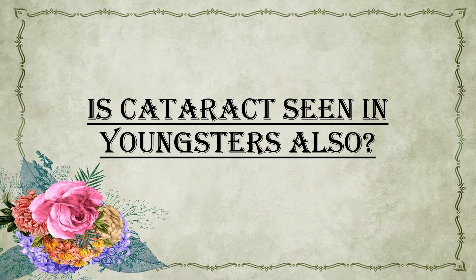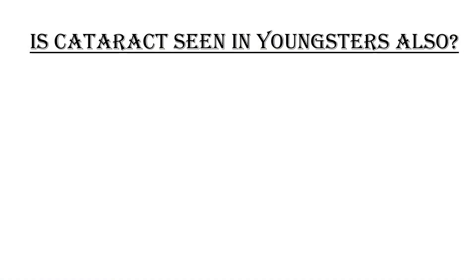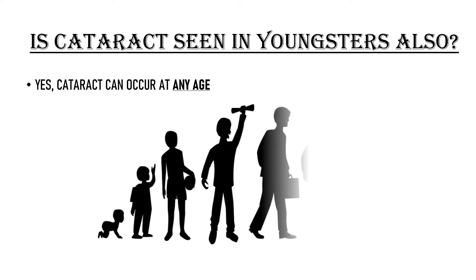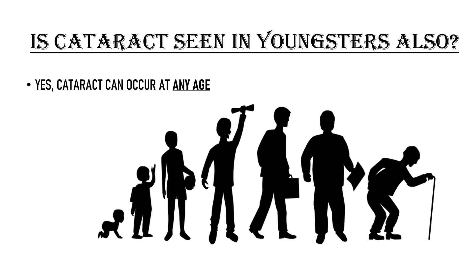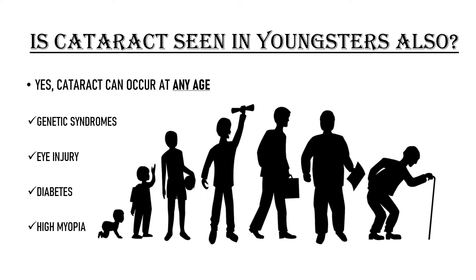Is cataract seen in youngsters also? Yes, cataract can occur at any age. Although the most common type is age-related, cataract can also be present in newborn babies, teenagers, and young adults. It can occur due to a genetic syndrome or after some injury to the eye. It is also seen in people who suffer from diabetes, those who wear thick myopic glasses, or those who use steroid medications — tablets, inhalers, injections, or creams — for a long time. The causes are many, and cataract is not exclusively a disease of the elderly.